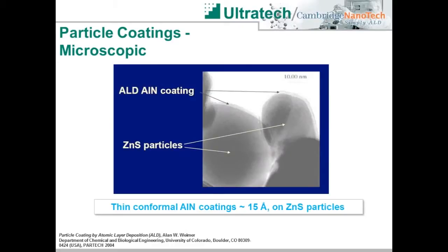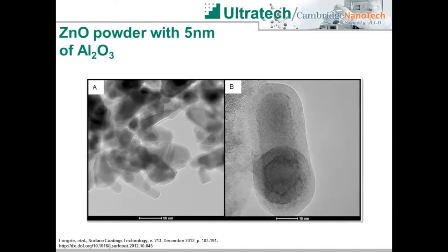Deposition of ALD films on particles and powders is also a possibility but presents some interesting challenges. Depending on their characteristics, particles can be quite mobile under vacuum conditions and may require larger than usual precursor doses due to their high surface area. Utilizing secondary containment to keep the particles together and treating the static particle arrangement as a high aspect ratio substrate is an easy way to coat small quantities of particles for R&D applications. TEM images from the literature show 50 to 100 nanometer zinc sulfide particles with a 15 angstrom ALD coating of aluminum nitride with excellent uniformity and conformality, as well as zinc oxide powder coated with 5 nanometers of aluminum oxide.